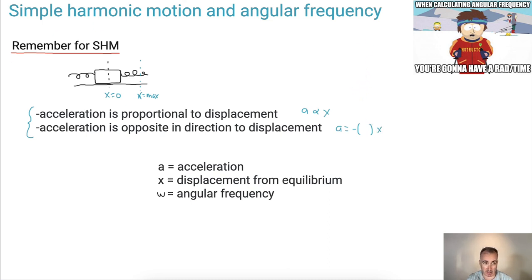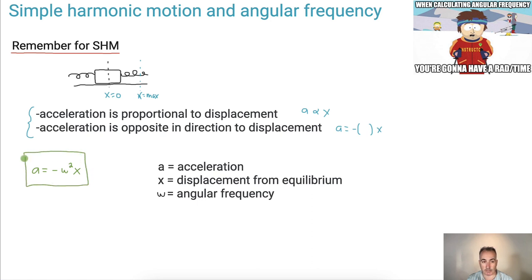Now let's be specific. We have a formal equation: acceleration equals negative omega squared times x. This is the key equation. It's in your data booklet so you don't have to memorize it. The acceleration is in meters per second squared, and displacement from equilibrium is in meters.